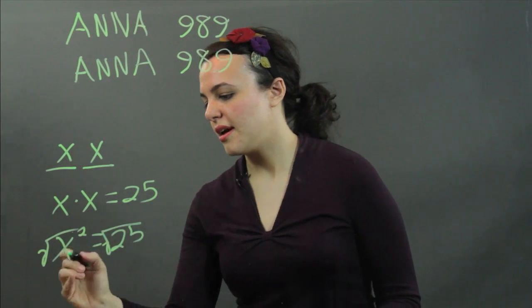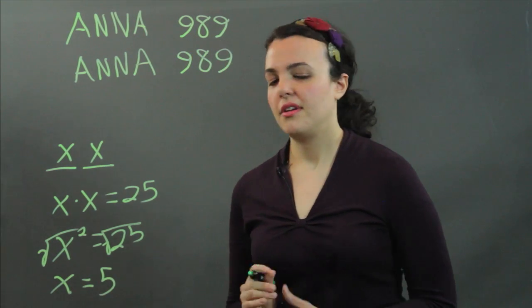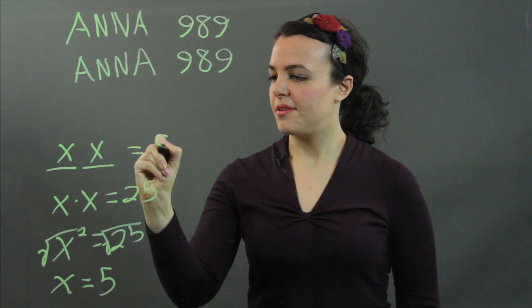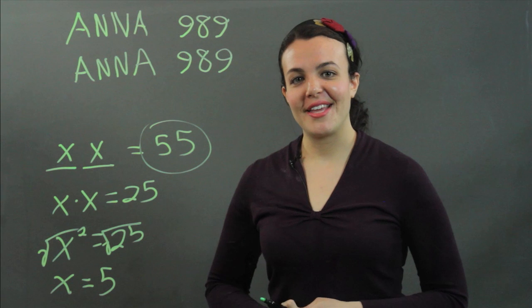And we get that x equals 5. So our number is 55. And that's the palindromic game. Thank you.